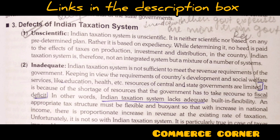Next topic is the defects of the Indian taxation system. The first defect is unscientific — the Indian taxation system is unscientific; there is no pre-determined plan followed and no clear basis of production, investment, and distribution. The second defect is inadequate — the Indian taxation system is not sufficient for the government's requirements to be met, for example in social welfare services like education and health, as these sources are limited.